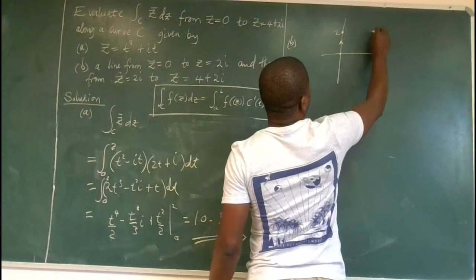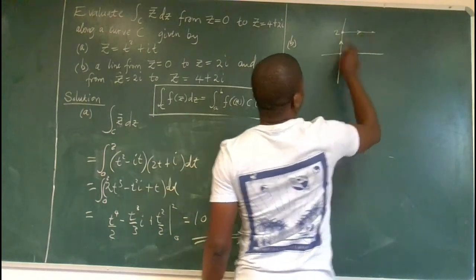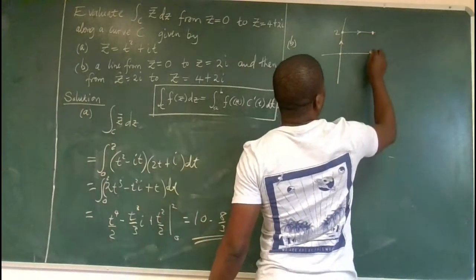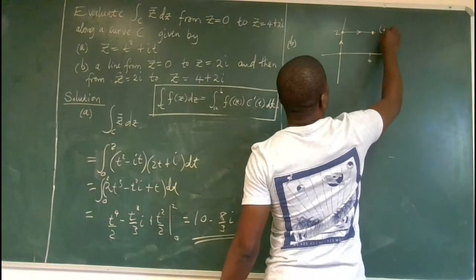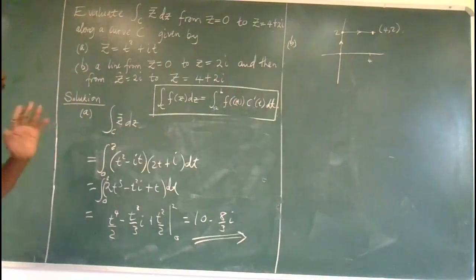That's a 2. And then later, we move from that 2i to 4 units on the x and 2 on the y. So this is the other point. So from here, we will continue to there. So this is the path we are supposed to take until we get to that point, 4, 2.